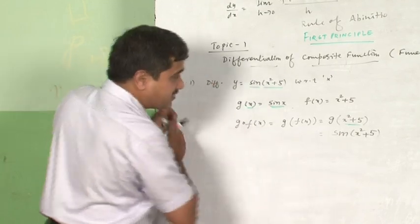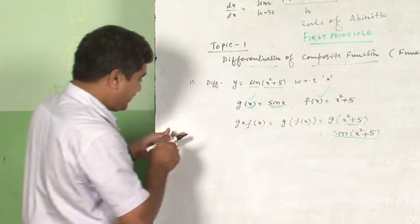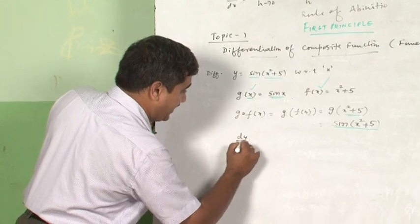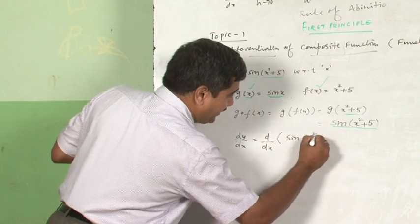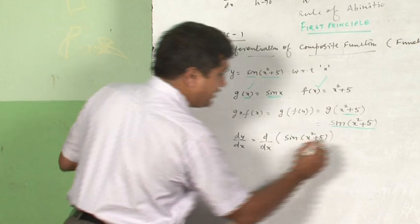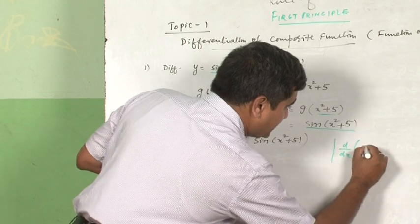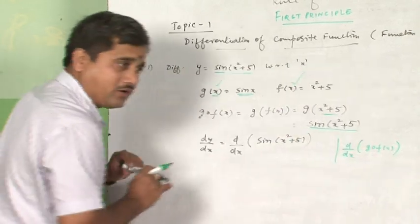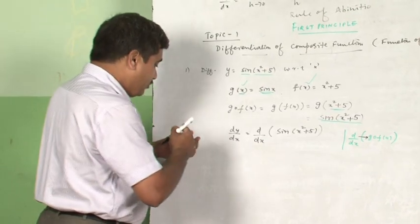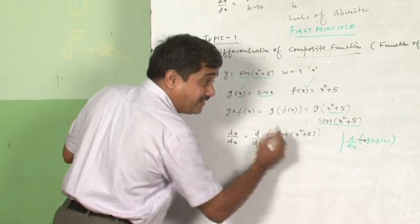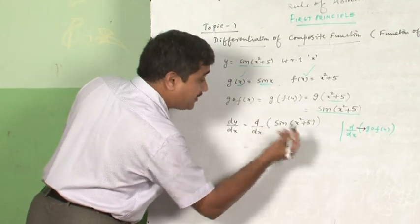When this composite function is formulated, you have two functions: g(x) and f(x). Suppose you want to differentiate and find dy/dx — that is d/dx of sin(x² + 5), which is the same as d/dx of g∘f(x). The first function you encounter is g, so you differentiate g first, treating whatever is inside as just x.